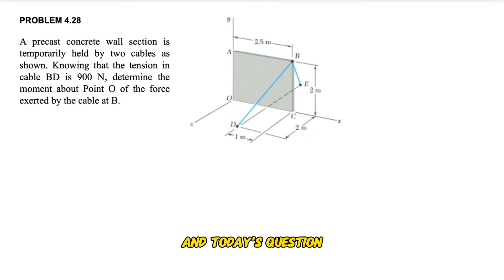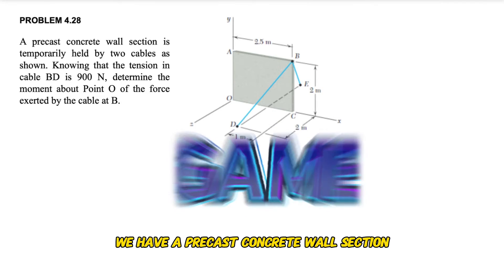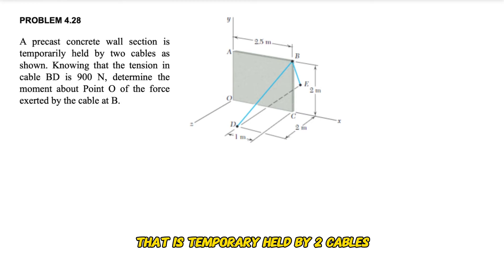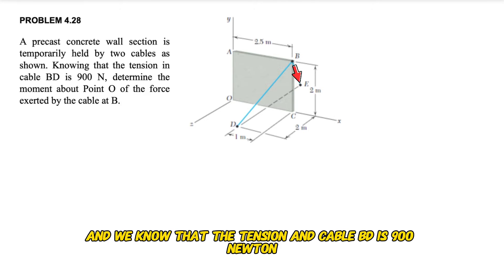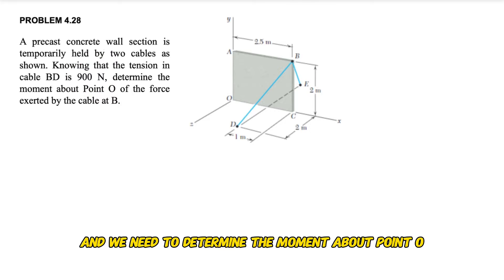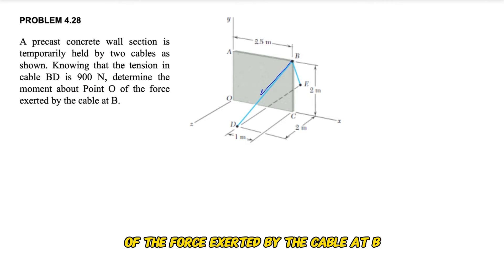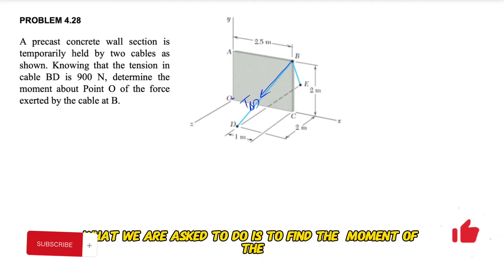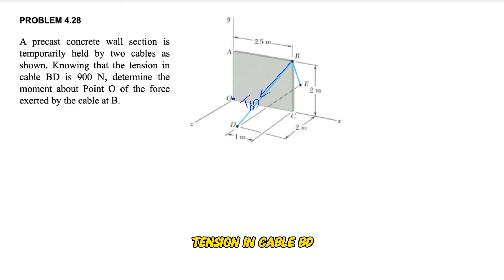Hello everyone, welcome back. In today's question we have a precast concrete wall section that is temporarily held by two cables, cable BD and BE. We know that the tension in cable BD is 900 Newtons, and we need to determine the moment about point O of the force exerted by the cable at B. Basically, we are asked to find the moment of the tension in cable BD.